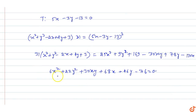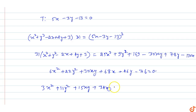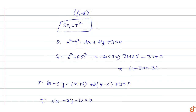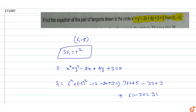So the equation of the pair of tangents simplifies — dividing through by 2 — to: 3x² + 11y² + 15xy + 34x + 23y - 38 = 0. This is the equation of the pair of tangents to the circle x² + y² - 2x + 4y + 3 = 0 from the point (6, -5).